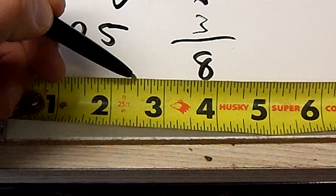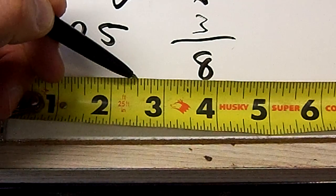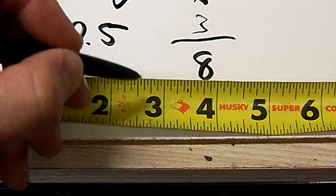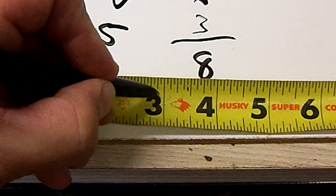So again, start at two and a half, right there. Then we're going to add three-eighths to it. One, two, three. This is going to be your center mark.